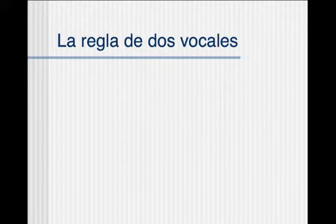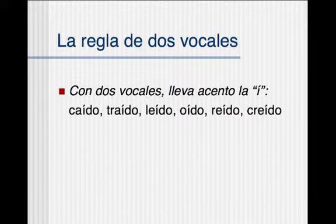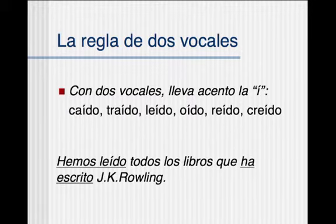There is also a rule — una regla — when there are two vowels, dos vocales. When you see two vowels in these past participles, the I needs to carry an accent. For example, the verb caer (to fall): yo he caído tres veces hoy — I have fallen three times today. Caído. Traído from traer. Leído — read. Oído — heard. Reído — laughed. And creído — believed. So it's just when there's that double vowel.